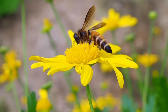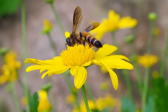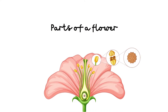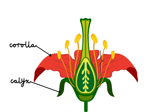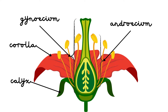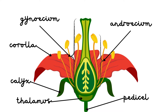Let's learn more about flowers and pollination. Parts of a flower. A flower has four parts: Calyx, Corolla, Androecium, and Gynoecium. These are also called the four whorls of a flower. The flower is attached to the stem by a stalk called the pedicel. The swollen end of the pedicel is called the thalamus. Let's learn about the different whorls of a flower.